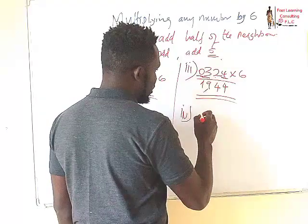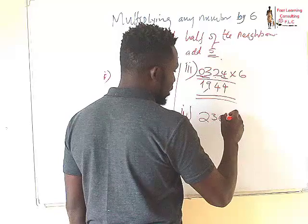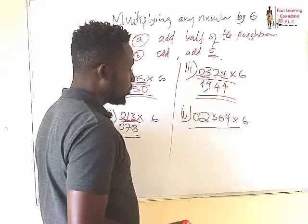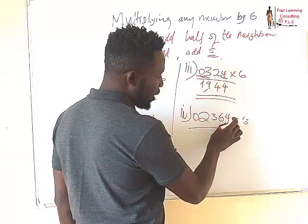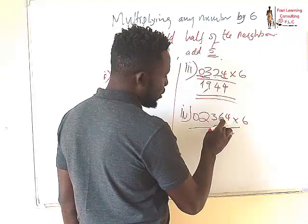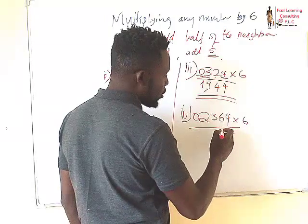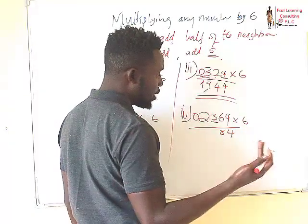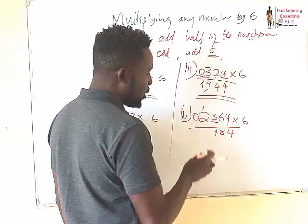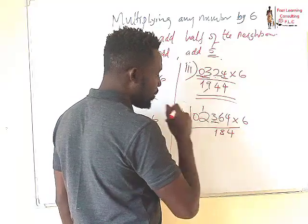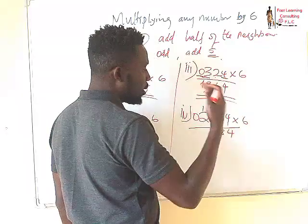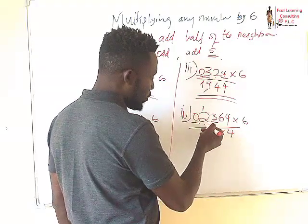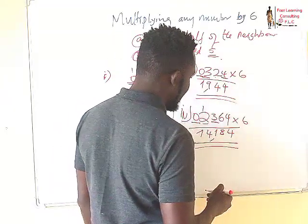Let's do the last one — the fourth example. Let's say 364 multiplied by 6. Using the same procedure: 4 doesn't have a neighbor, so we have 4. Then 6, plus half of the neighbor, which is 2, gives us 8. Then 3 — because it's an odd number we add 5, so that's 8, plus half of the neighbor which is 3, giving us 11 — carry 1. Then 2, plus half of the neighbor which is 3.5, we round down to 1, plus the carried 1, gives us 4. And then half of the neighbor of 2 is 1. So our answer is 2,184.